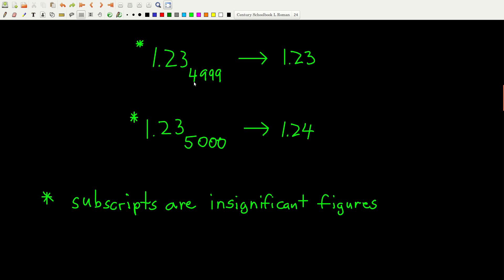And so what I do is I want to keep information about which numbers are significant and which aren't. So I write my insignificant figures as subscripts. So in this number here, 1.23 sub 4999, there's only really three significant figures. But for some reason, I had these other ones that I don't want to drop yet. So I wrote them as subscripts.